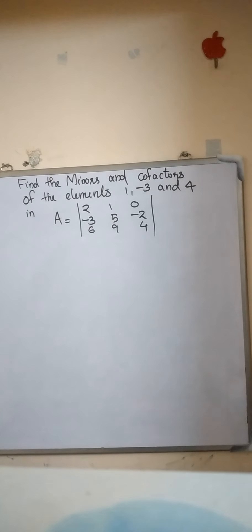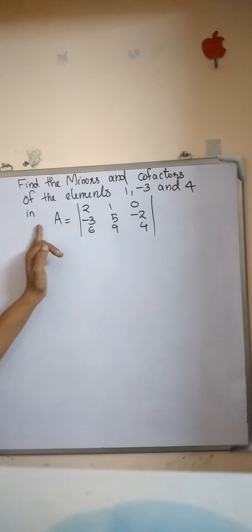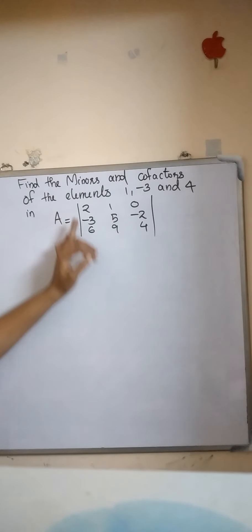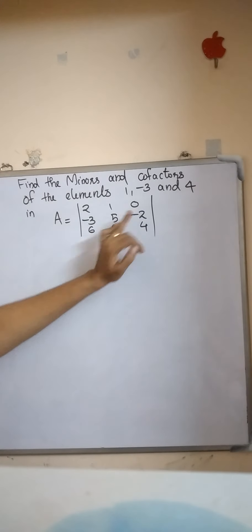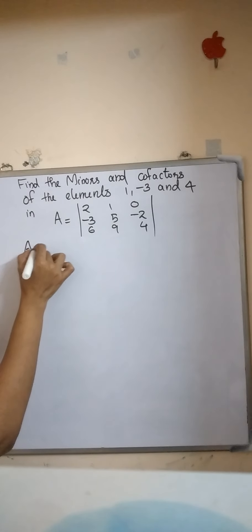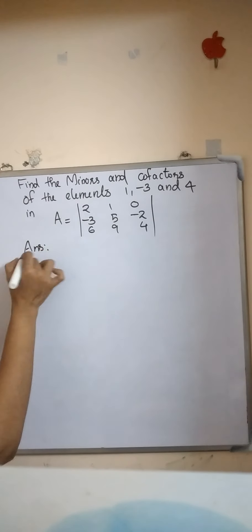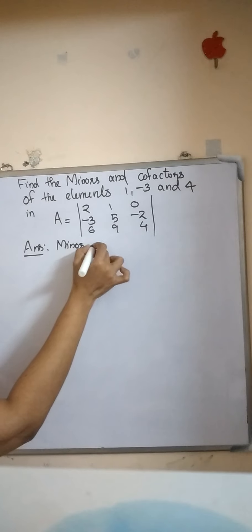Now we discuss a problem. Find the minors and cofactors of the elements 1, minus 3, and 4 in the determinant A, where A equals the determinant with rows: 2, 1, 0; minus 3, 5, minus 2; 6, 9, 4. First, we find the minor of 1.